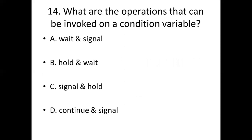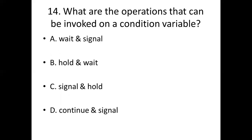Fourteenth bit: What are the operators that can be invoked on a condition variable? Option A: Wait and signal. Option B: Hold and wait. Option C: Signal and hold. Option D: Continue and signal. Answer: Option A — Wait and signal.